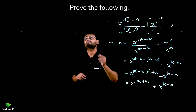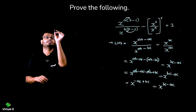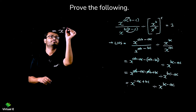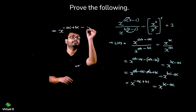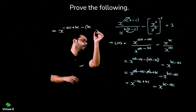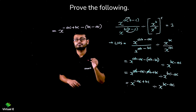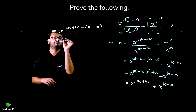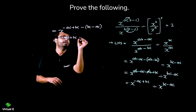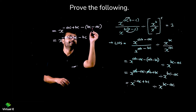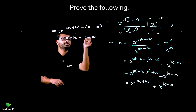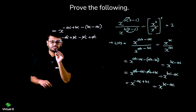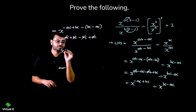Now we have the common base X and X with a division sign between them, so we are going to subtract the powers. So here X raise to minus AC plus BC, and then minus the power BC minus AC. Let's open the bracket: minus AC plus BC minus BC, and minus AC becomes plus AC. Plus BC minus BC get cancelled. Minus AC and plus AC get cancelled. So there's nothing left — we can write X raise to zero.